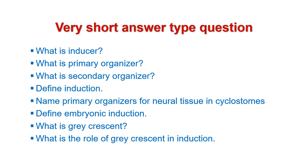The first question from this category is: What is inducer? Next, what is primary organizer? Next, what is secondary organizer? Next, define induction. Next, name primary organizers for neural tissue in cyclostomes. Next, define embryonic induction. Next, what is grey crescent? And the last question from this category: what is the role of grey crescent in induction?